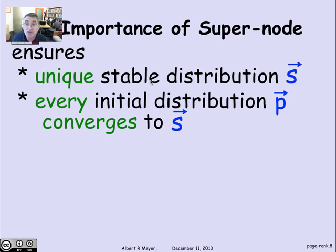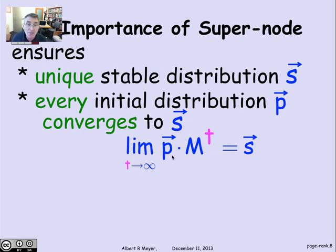The super node mechanism also ensures something even stronger, that every initial distribution p converges to the stationary distribution, to that unique stationary distribution. Stated precisely mathematically, if you start off at an arbitrary distribution of probabilities of being in different states, p, and you look at what happens to p after t steps. Remember that you get by multiplying the vector p by the matrix M raised to the power t. And you take the limit as t approaches infinity. That is to say, what distribution do you approach as you do more and more updates? And it turns out that that limit exists, and it is that stationary distribution. So it doesn't matter where you start. You're going to wind up stable.